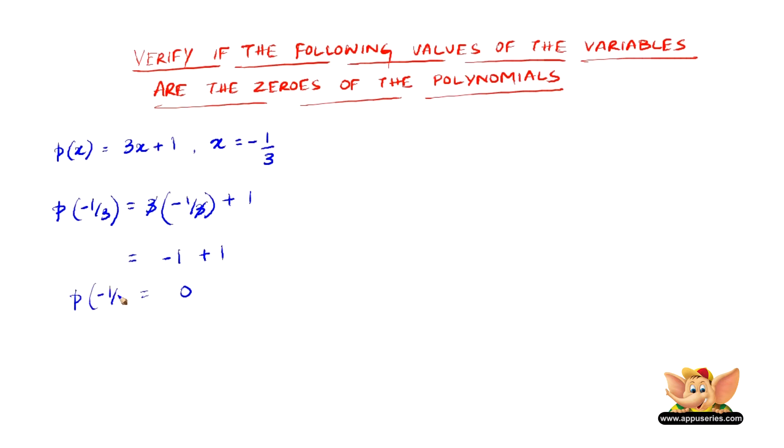So therefore, p of minus 1 by 3 is the zero of 3x plus 1.